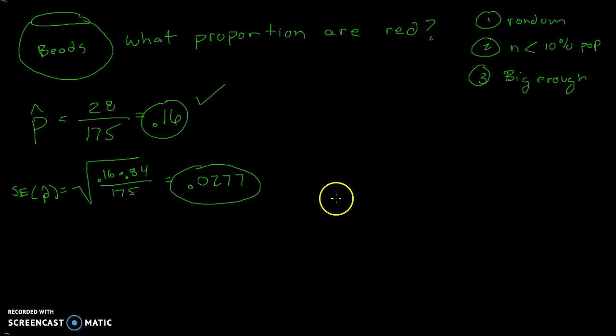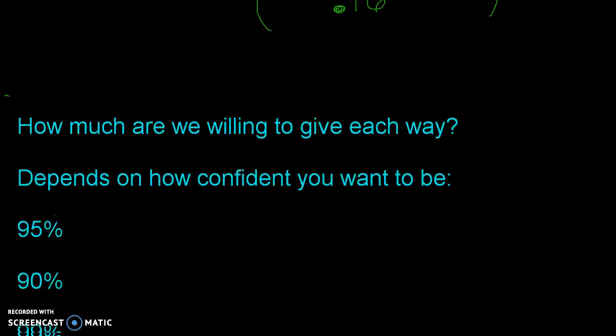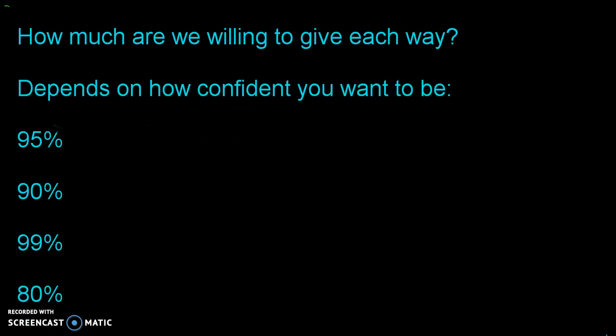So what I want to think about is: how big do I want to make my interval? I'm going to start at 0.16 — that's my P-hat — and I want to go up a little bit and go down a little bit to create an interval for where the true value will occur. However, how much am I willing to go up, and how much am I willing to go down? That's where the level of confidence comes in. How much you're willing to give each way depends on your level of confidence — this is how much to add and subtract from the P-hat in the middle.